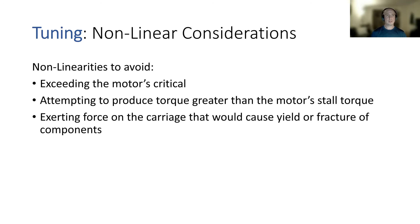When you're choosing these PID values, this can help you avoid non-linearity situations. So what we're going to avoid is exceeding our motor's critical speed, which will send us into a non-linear or unexpected region. We're going to want to avoid attempting to produce torque greater than the motor stall current so we can always be predictably outputting torque. And then finally, we're going to want to avoid exerting force on the carriage that's going to yield or fracture any of the components in your system.